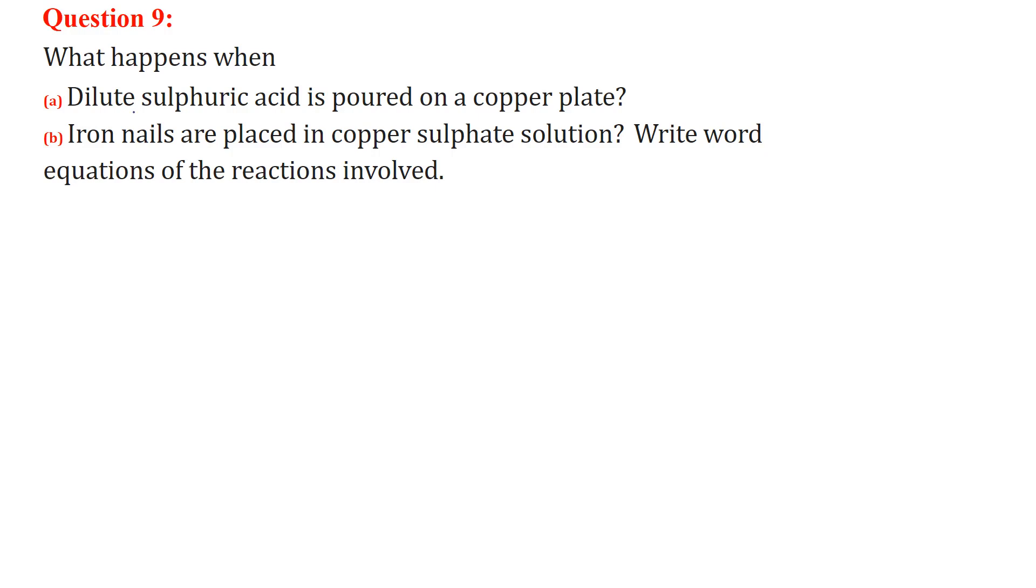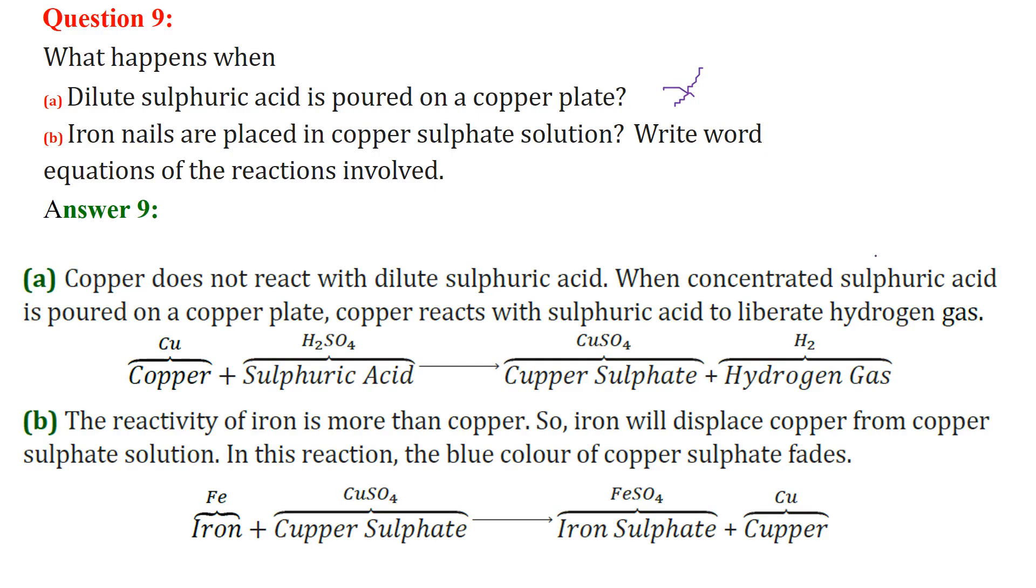What happens when dilute sulfuric acid is poured on a copper plate? Nothing. But if we actually pour concentrated sulfuric acid on a copper plate, this copper Cu will react with sulfuric acid which is H2SO4 and this will liberate hydrogen gas because Cu forms combination with SO4, this will be CuSO4, H2 will be liberated, hydrogen gas.